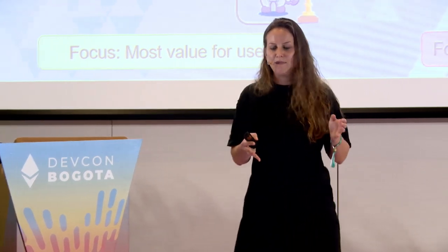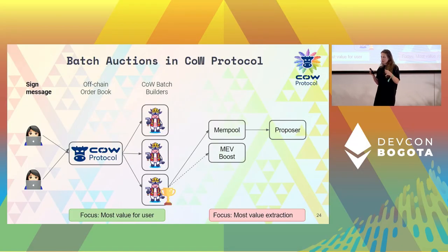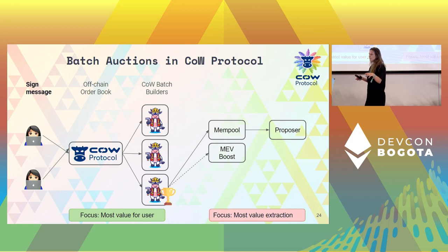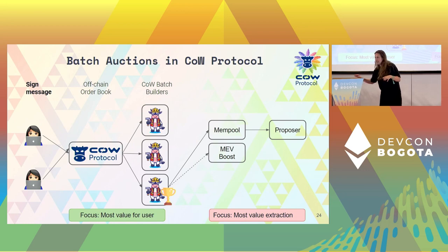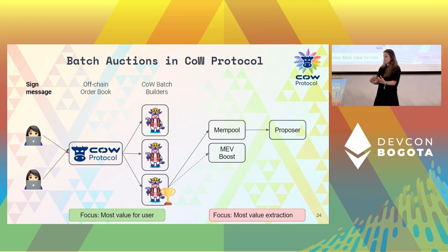So these are two separate processes. Cow Protocol is the application layer: we collect user orders off-chain as signed intents to trade in an off-chain order book, then run the cow builder competition with its own separate rule set. This is completely orthogonal to the block builder competition on Ethereum. In the cow batch builder competition, participants only win if they are maximizing value for the user.